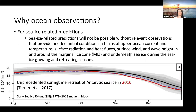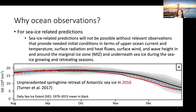Finally, I want to mention sea-ice-related predictions. These need good initial conditions in terms of upper ocean currents, temperature, surface radiation, its fluxes, surface wind, and wave height. We need observations at the edge of the ice and in the marginal ice zone. Increasing the amount of observations we have over time will allow us to do a better job at predicting extreme events like the unprecedented springtime retreat in Antarctic sea ice in 2016. A schematic graph shows on the horizontal axis the month in 2016 and on the vertical axis sea ice extent; comparing the mean for 1979–2015 with the red line for 2016, we see this unprecedented springtime retreat that we would want to forecast better.